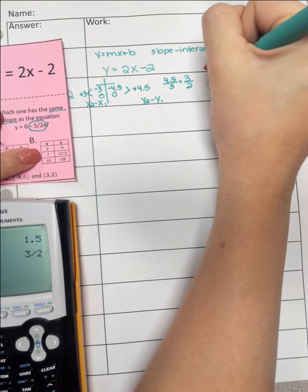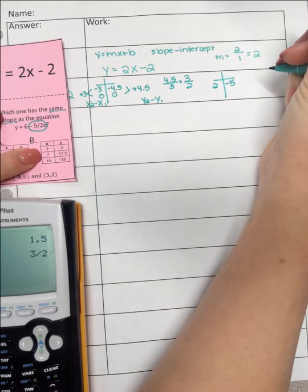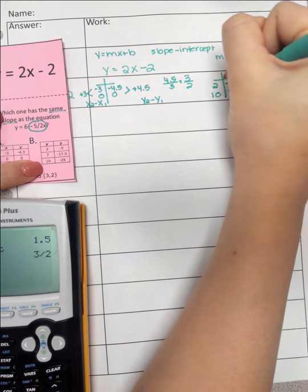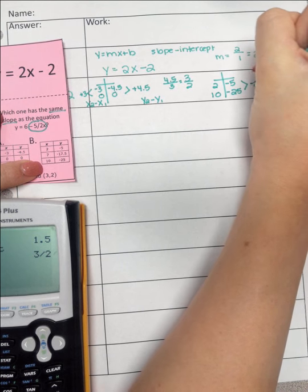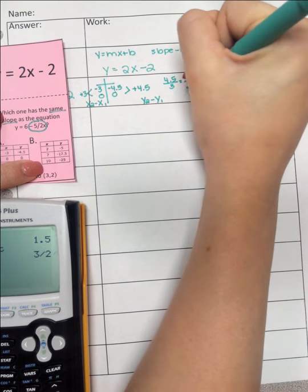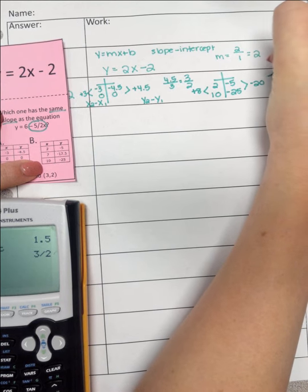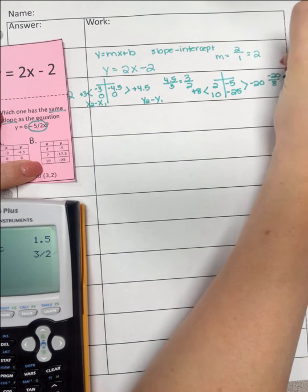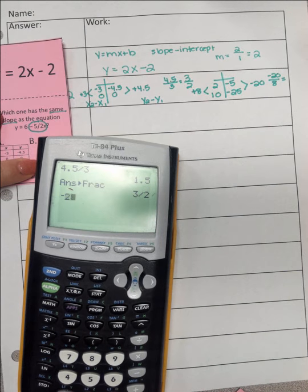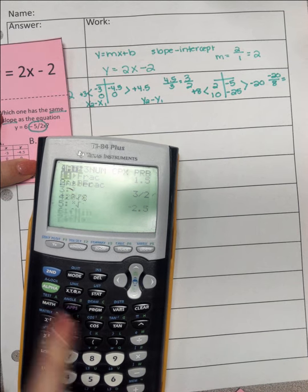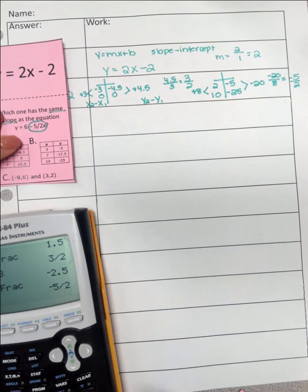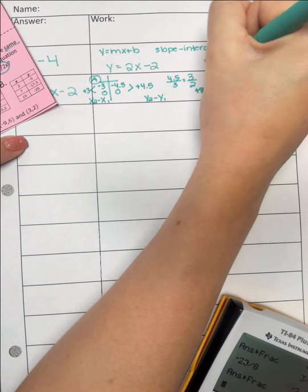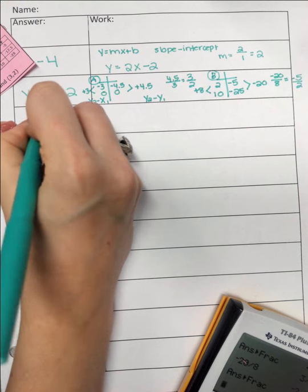So we've got 2, negative 5. You can use any two points, so I'm going to use 10, negative 25, because I like whole numbers. So to get from here to here, it's minus 20. Here to here, it's plus 8. So negative 20 over 8 equals, math, enter, enter, negative 5 over 2. Is that the slope I'm looking for? Yes, it is. So this is A, this is B. So my answer is B.